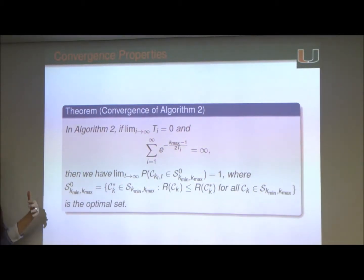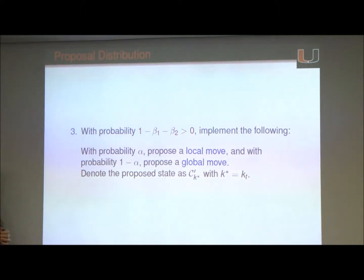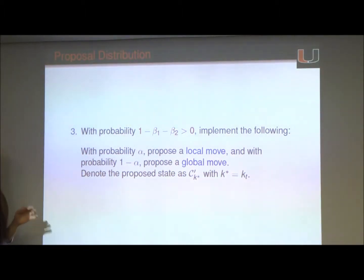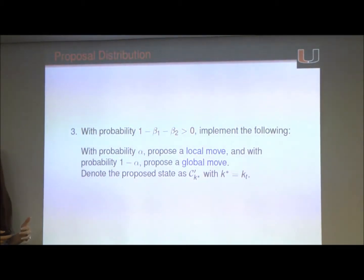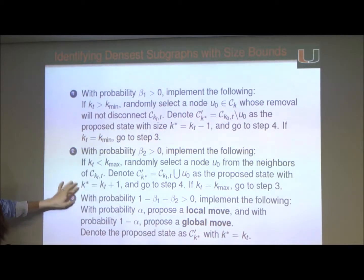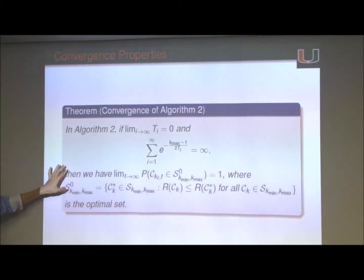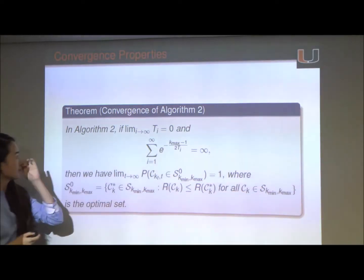The theory is always a guide for what's going to happen in practice, so this is saying our algorithm should be expected to have good performance. Regarding the question about whether those probabilities depend on where you are at a given time — in the work we have, we don't change the probability; it's preset as an input for the algorithm. But if you want the algorithm to be more efficient, you can dynamically change the parameters during the algorithm — that is adaptive MCMC. The second algorithm is also shown for the sampler to converge to the optimal set with probability 1 if we have certain constraints on the temperature.